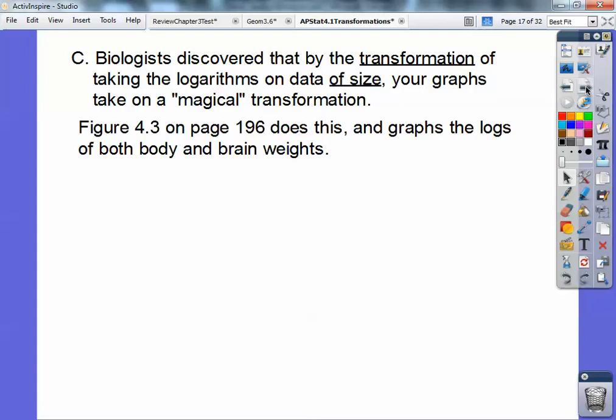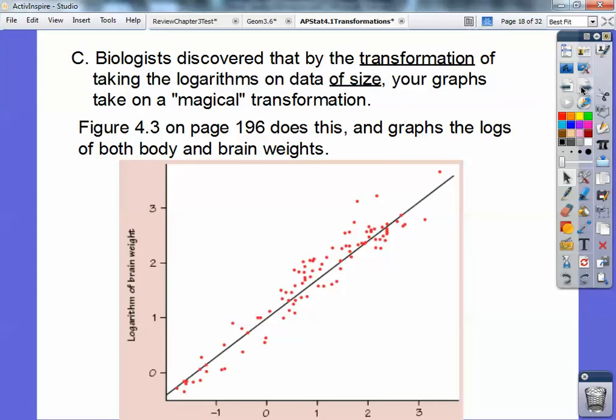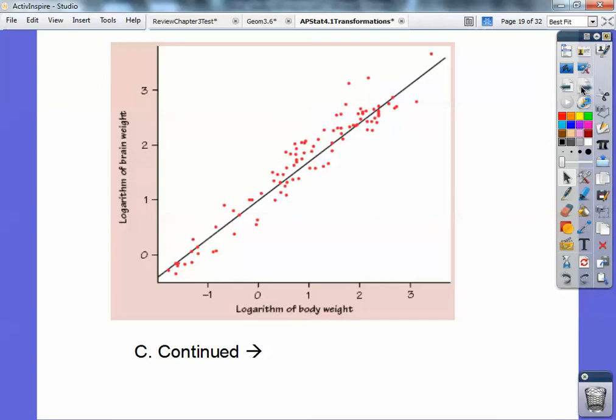This next figure is on page 196. It takes the log of the brain weights and the log of the body weights. Remember logarithms from your Algebra 2 class? So you have the body weight in list 1 and the brain weight in list 2. What you're going to do for list 3 is you're going to log list 1. So up here where it says list 3, you'd log list 1 and all of a sudden you'd have all the logarithm numbers of all list 1. And then list 4, you'd take all the logarithms of list 2. Then you'd graph list 3 and list 4 and it would look like that. Isn't that magical? Look how close those guys get. They make close to a line. That is cool, man.